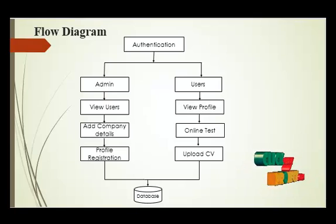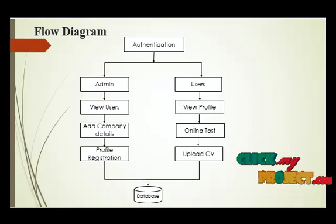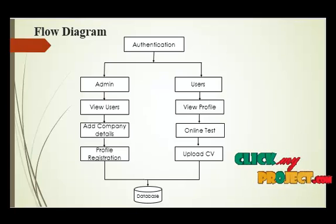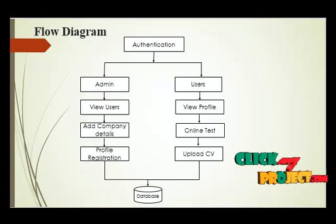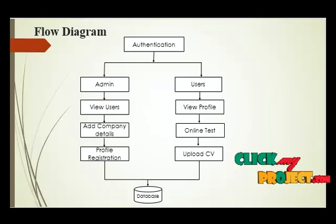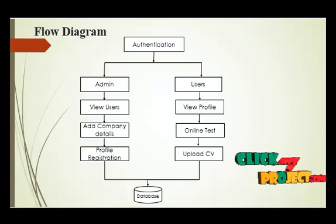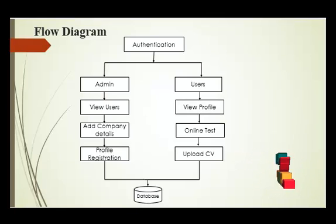This is used to post the resume of eligible candidates to the suggested companies. The company can see their resumes and can easily communicate with the users. After the user receives results, if they are eligible, they can upload their resume to the concerned companies. The admin can view all the registered candidate details, and company details will be added by the admin, including type of industry, expected salary, and category. This process is used to suggest relevant companies to eligible candidates. When the candidate passes the exam, the system will suggest some relevant companies.